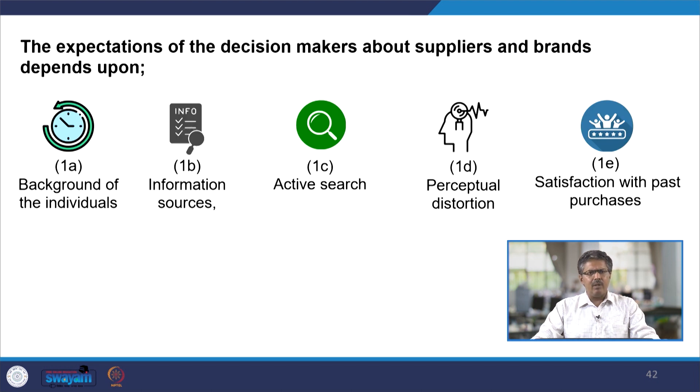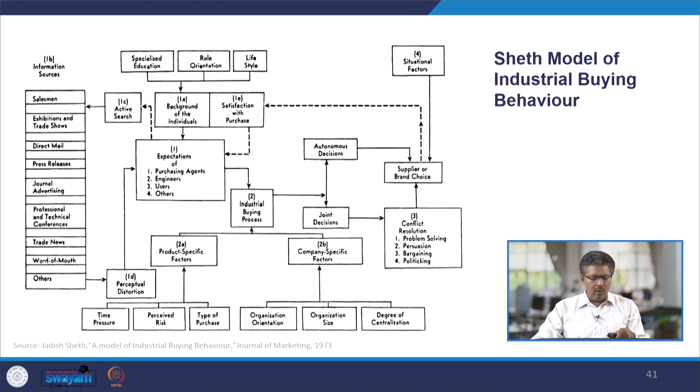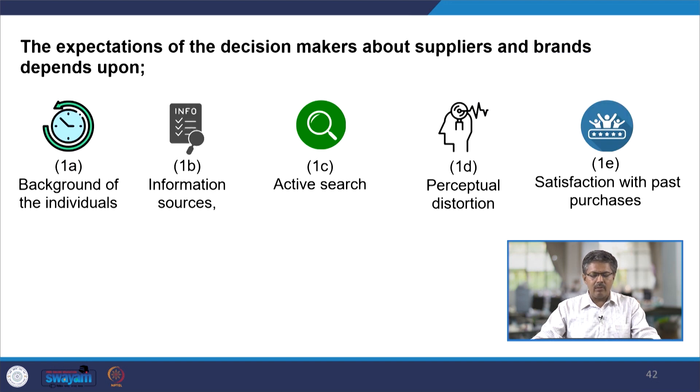Let us start with the first point: the expectation of the decision makers. Looking at the expectations of decision makers about suppliers and brands, it depends on 5 factors. The first factor is the background of the individual. As we discussed in the last lecture, the decision is always taken by a human being, not a machine, and human beings cannot be devoid of emotions. What kind of person is leading the organization, what is his background, where he has come from, how risk-taking he is, what kind of personality he has — all these things can have a profound effect on the purchasing process and the selection of suppliers, vendors, and brands.